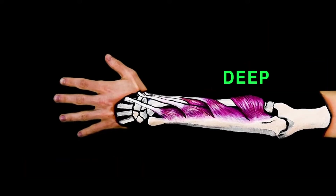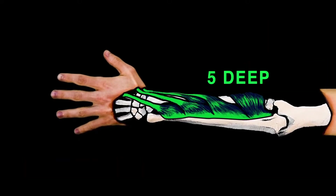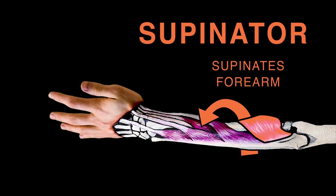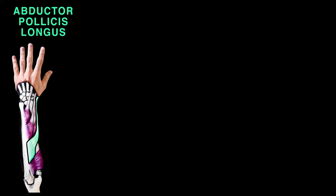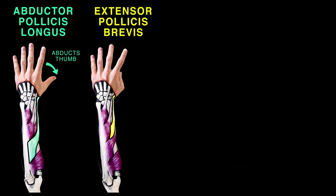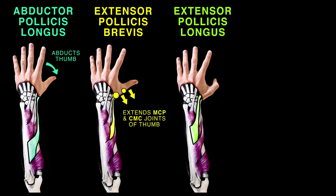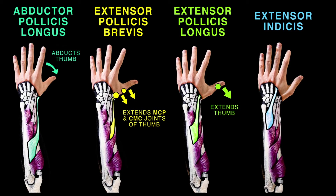Now let's discuss the five deep muscles: the supinator, abductor pollicis longus, extensor pollicis brevis, extensor pollicis longus, and extensor indicis. With the exception of the supinator, the deep muscles create motion in the thumb and index finger.